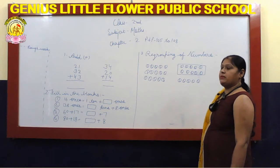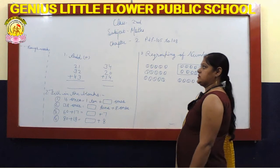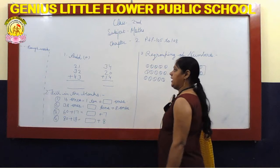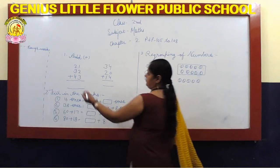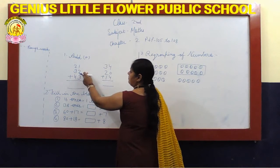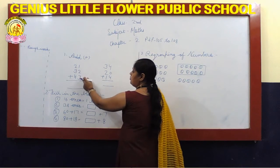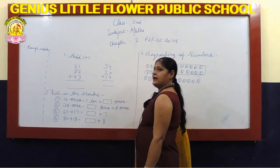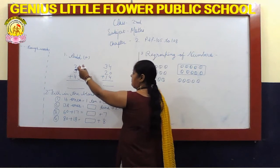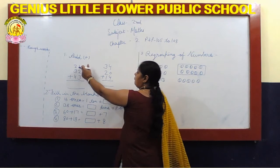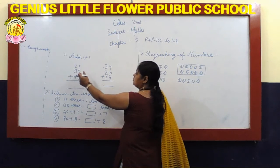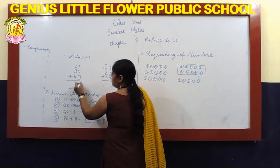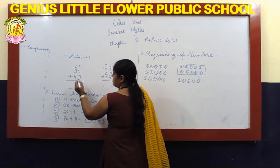Question number 1. Add 1 plus 2 plus 3. Step 1: 1 plus 2 is 3. 3 plus 3 is equal to 6.